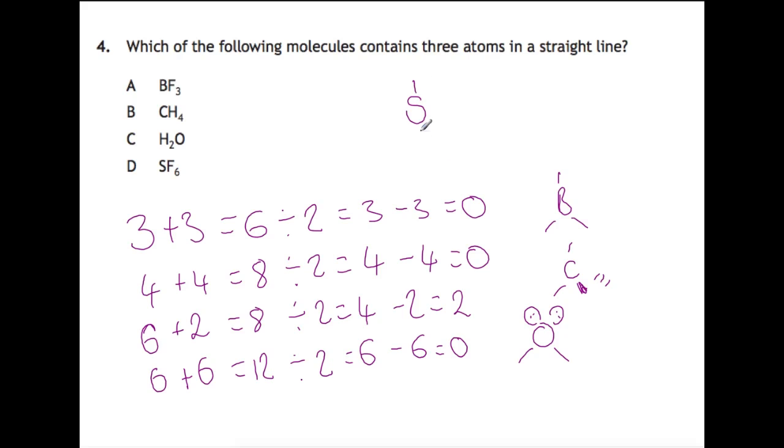If we just draw this up here, you've got sulfur in an octahedral arrangement. Your octahedral arrangement means that you have 180 degrees between these two, between these two, and these two, and then 90 degrees between all the rest. So your straight line atoms would be F-S-F, so your answer here would be D.